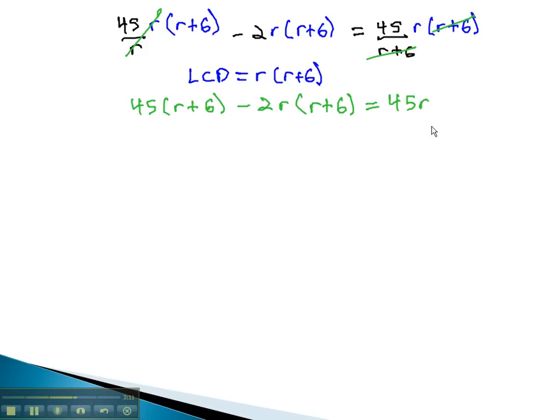We can continue solving by distributing through the parentheses. We get 45r plus 270, minus 2r squared, minus 12r, equals 45r.